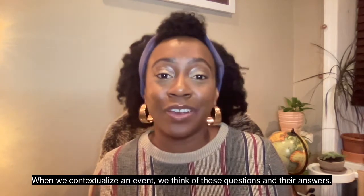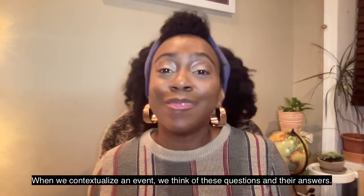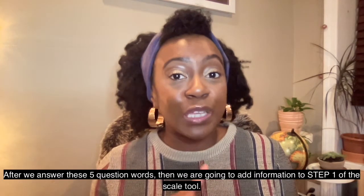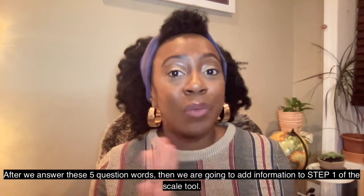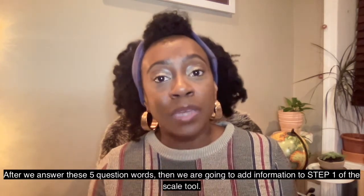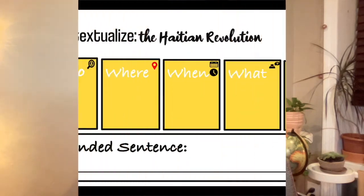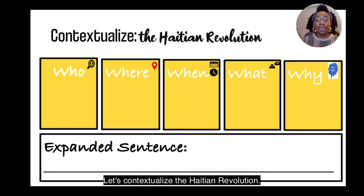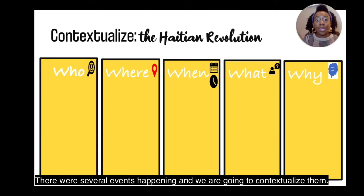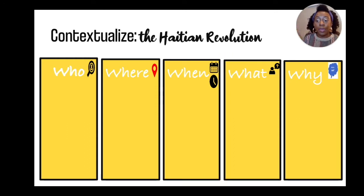When we contextualize an event, we think of these five questions and their answers. Let's practice — we are going to contextualize the Haitian Revolution. After we answer these five question words, we're going to add the information to step one of the scale tool. So let's contextualize the Haitian Revolution. There are several events happening and we're going to contextualize them each.